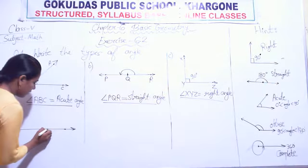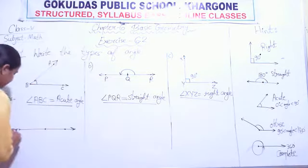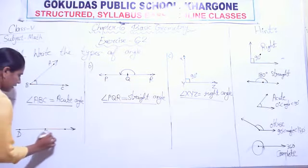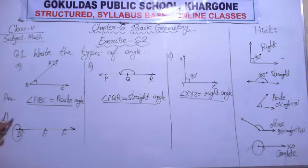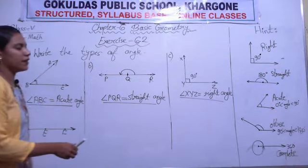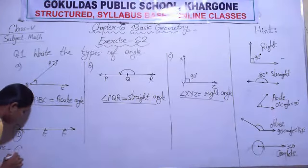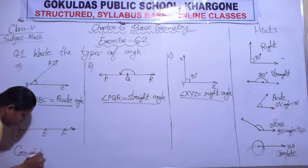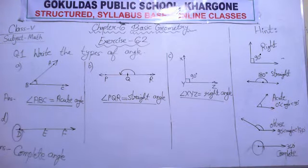In question D, three points are given — D, E, F. At point D the angle shown is a complete round. The round is complete, meaning it is a complete angle that measures 360 degrees.